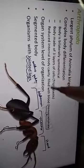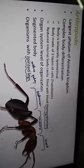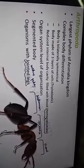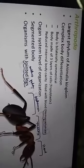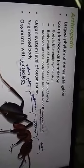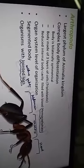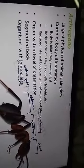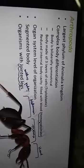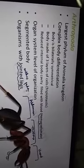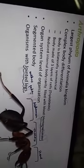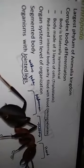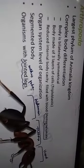The internal body cavity is filled with blood. This reduced body cavity filled with blood is called the haemocoel — 'haemo' means blood, so it is referred to as haemocoelomate due to the presence of blood. The blood is white in color. They have an organ system level of organization.